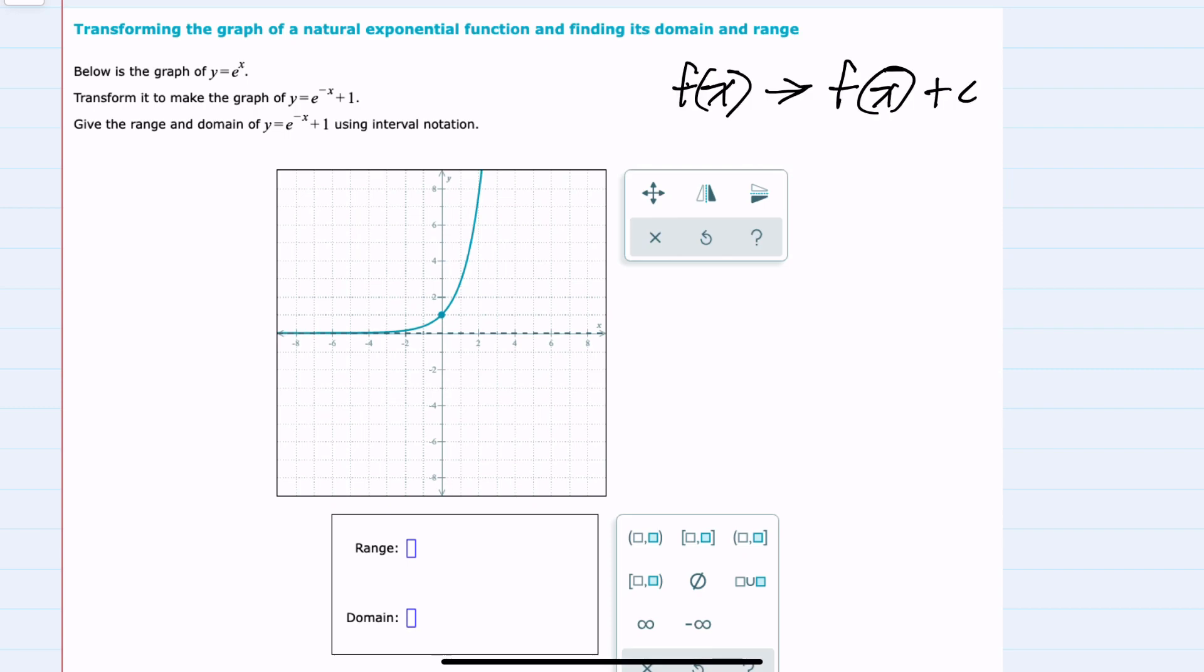I'll start by recalling that whenever I have a function, if I add a value to the end of that function, such as c here, when c is positive, this will translate the graph up c units. If c is negative, that would translate the graph down c units.